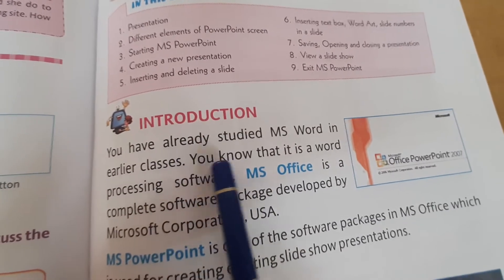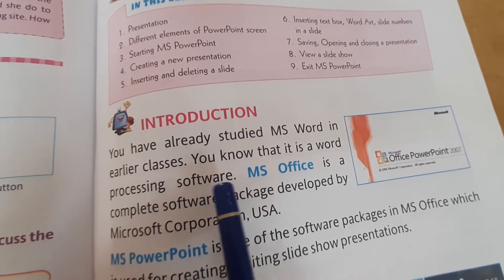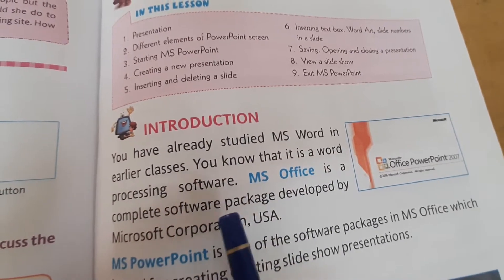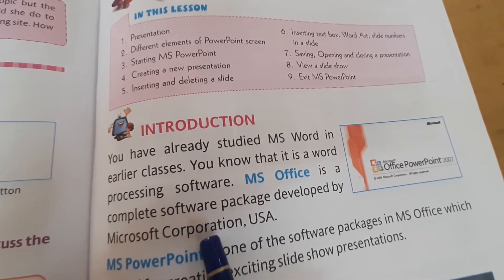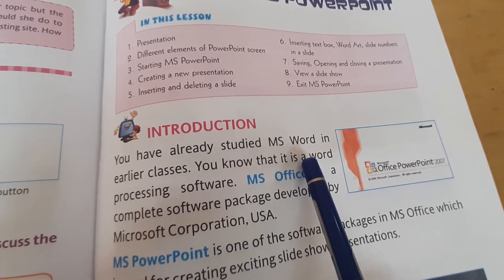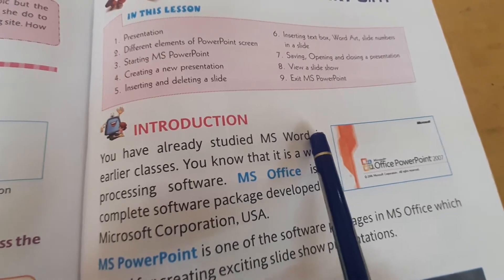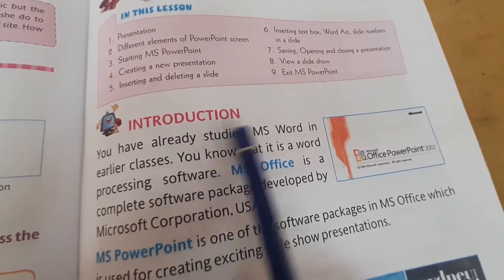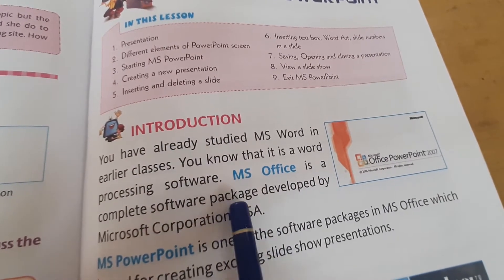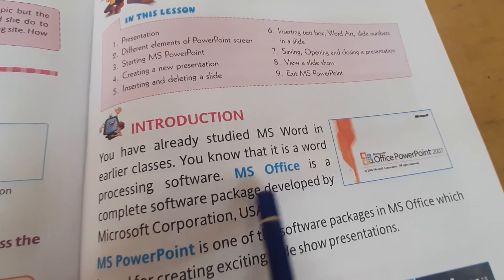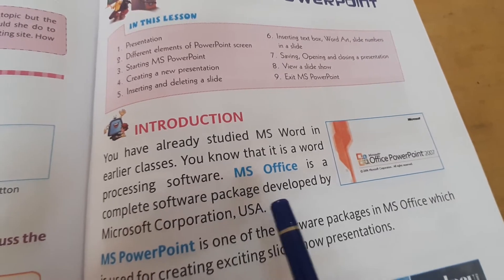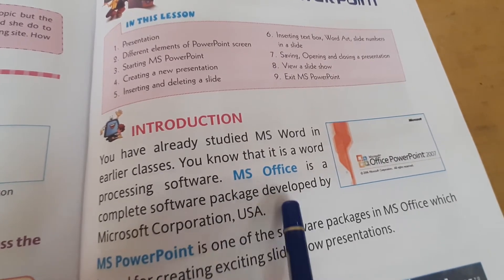Introduction. You have already studied MS Word in earlier classes and you know that it is a word processing software. MS Office is a complete software package developed by Microsoft Corporation, USA. We are talking about MS Word that you have already studied in class 3 and even in class 4, and it is a part of the MS Office package. Now a brief introduction: MS stands for Microsoft, and it is developed by Microsoft Corporation, a USA-based company.